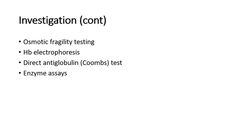If the cause is still not obvious after the peripheral blood film, further investigations can be done. Osmotic fragility testing confirms whether there are membrane abnormalities. Hemoglobin electrophoresis detects any defect in the hemoglobin. The direct Coombs test identifies red cells coated with antibody or complement — the presence of those antibodies indicates an autoimmune cause. Enzyme assays are only done when all other causes have been excluded.